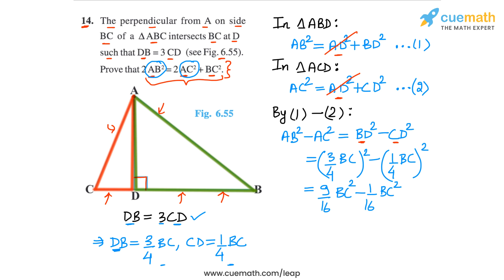9/16 minus 1/16 is 8/16, which is 1/2. So this basically gives us BC square by 2.